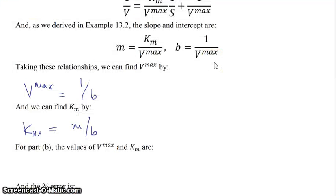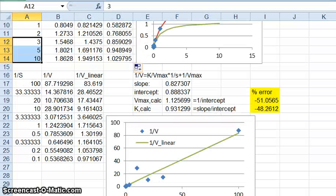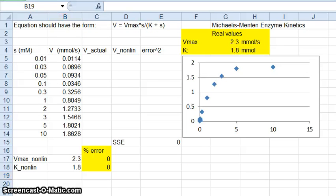Going back over to the lecture notes, what we've calculated in part A was that Vmax was equal to 1.13 and Km was equal to 0.931, totally way off. Now for part B we're going to head back over to Excel and look at how Solver was used to solve these equations. What we want to do here is we want to calculate what is the value of the non-linear solution, calculate the error from our data, and then minimize the sum of the square of the error as we have done before.